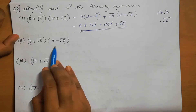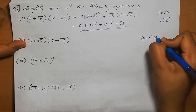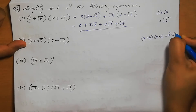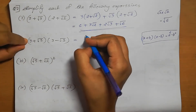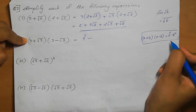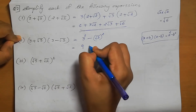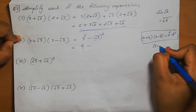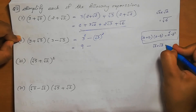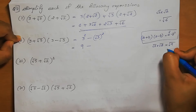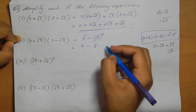Second one: (3 + root 3) into (3 minus root 3). This is in the form of (a + b)(a - b), which equals a squared minus b squared. Here a equals 3 and b equals root 3. So we get 3 squared minus root 3 squared, which is 9 minus 3, giving the answer 6.